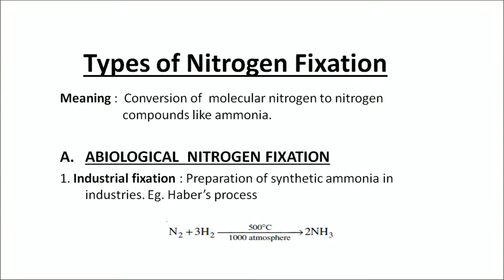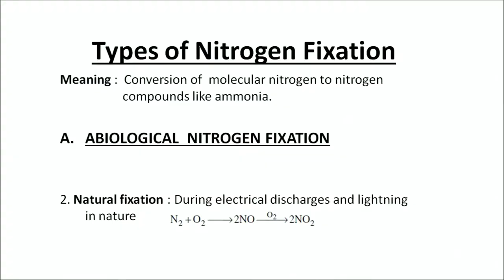The first type of nitrogen fixation is called abiological nitrogen fixation because it does not involve any microbes. The first process under abiological fixation is Haber's process, which is the preparation of synthetic ammonia at the industrial level — nitrogen combines with hydrogen under high temperature and high pressure to form ammonia. The second process of abiological nitrogen fixation is natural fixation, which occurs during electrical discharges and lightning in nature.